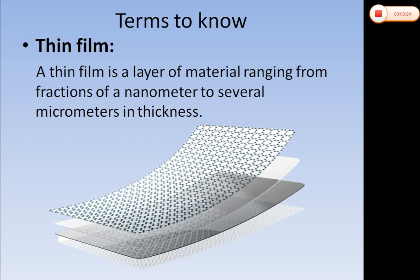Before starting sputtering, we have to know about the thin film and thin film deposition. A thin film is a layer of material ranging from fractions of nanometers to several micrometers in thickness. Here you can see a picture of a thin film deposited on a real substrate. The thin film is a fraction of a layer ranging from nanometer to micrometer in thickness.